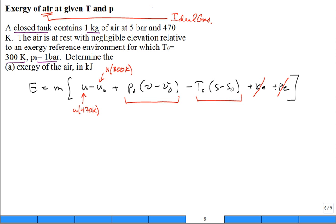So what I was looking for is for somebody to say, okay, P naught times V, but always V for an ideal gas is RT over P. So this becomes P naught times RT over P minus RT naught over P naught. I can put P naught R times T over P minus T naught over P naught.